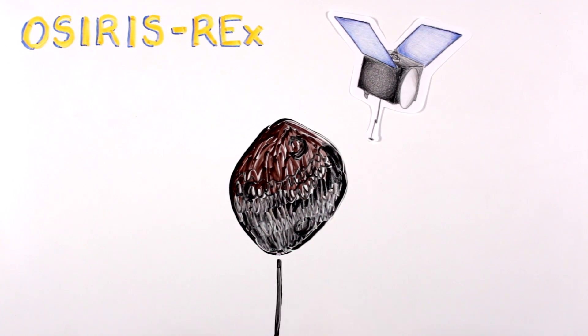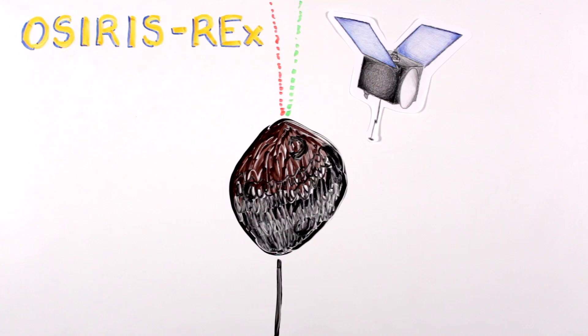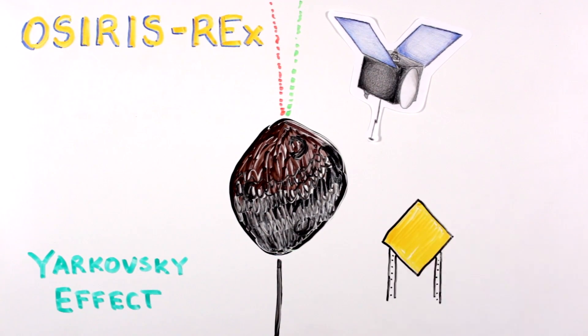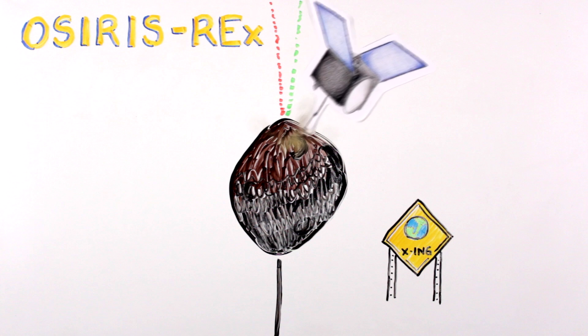OSIRIS-REx will precisely measure Bennu's orbit and the small orbit deviations caused by sunlight as a result of the Yarkovsky effect, to determine whether Bennu will impact the Earth in about 200 years. And while it analyzes the future orbit, OSIRIS-REx will also map the surface, and collect a sample of material that formed the building blocks of life, and return it to Earth to tell us about our origins and how useful asteroids can be for future exploration.